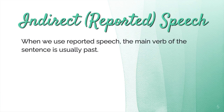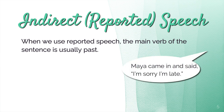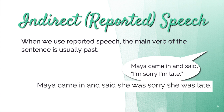When we use indirect or reported speech, the main verb of the sentence is usually past. For example: 'Maya came in and said, I'm sorry I'm late' becomes 'Maya came in and said she was sorry she was late.' You may notice the verb 'to be' becomes past — so 'I am late' becomes 'she was late.'